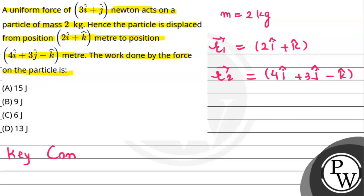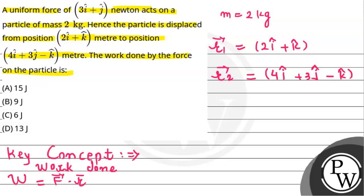Before we start the solution, let's talk about the key concept which we are going to use here for this question. We remember that the concept of work done by force can be given as W is equal to the force vector multiplied by the displacement vector.